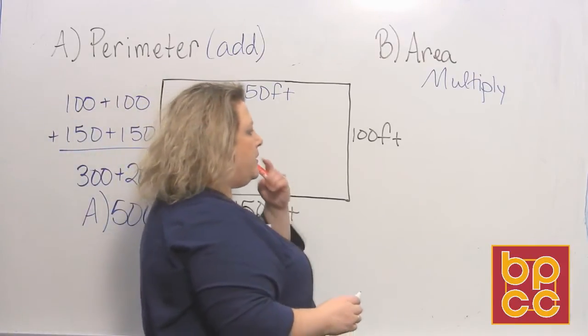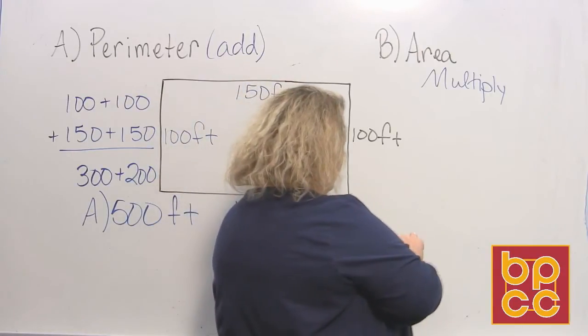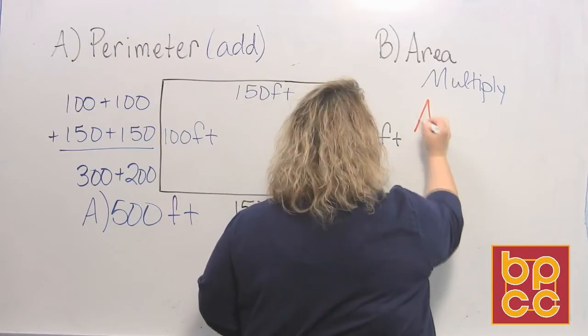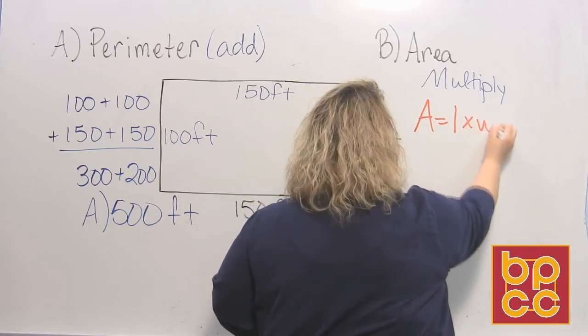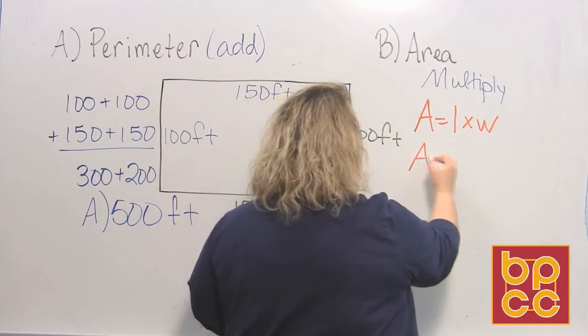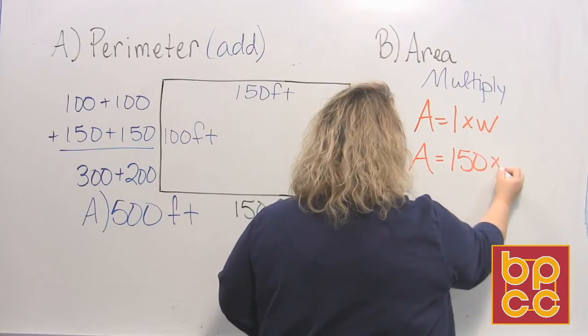Okay, now we want to do multiplication. We want to do area. Area is length times width. So we need to know that. Area is equal to length times width of a rectangle. So our two measurements are 150 times 100.